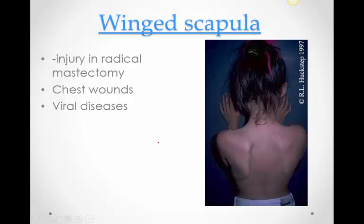Now let's look at the axilla. It's a pyramidal space between the upper limb and the thorax. It has an inlet also known as the apex, a floor also known as the base, and then it has walls: an anterior wall, a posterior wall, a medial wall, and a lateral wall. Imagine putting a little box in there — that's what it is.